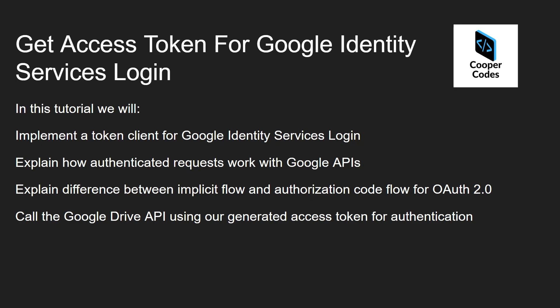Hey there, it's Cooper Codes. In this video, we are going to be working on getting an access token for the Google Identity Services login. We're going to implement a token client for the services login, explain how authenticated requests with Google APIs use the access tokens, explain the difference between implicit flow and authorization code flow for OAuth 2.0, and call the Google Drive API using our generated access token for authentication.